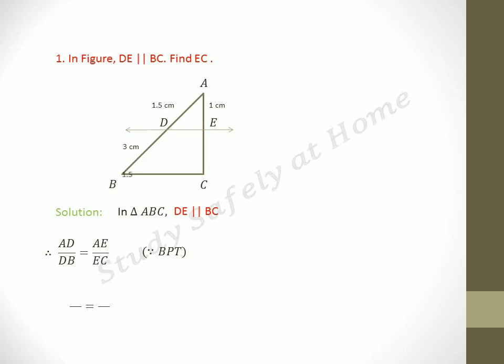So, we have to substitute the values. AD by AD means 1.5 by 3 is equal to 1 by EC.